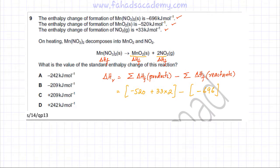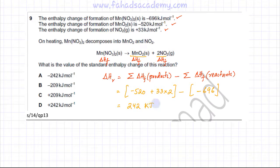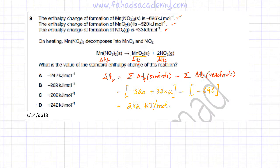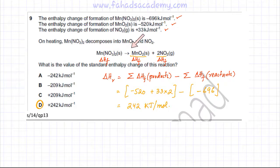Using a calculator, the answer comes out to be 242 kJ/mol. Products minus reactants gives 242 kJ/mol. Hence, option D is the correct option for this question. The enthalpy change for this particular reaction is 242 kJ/mol.